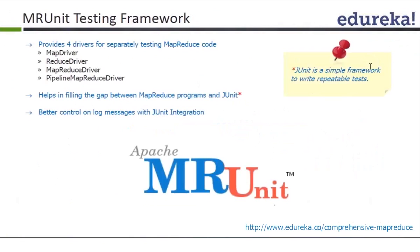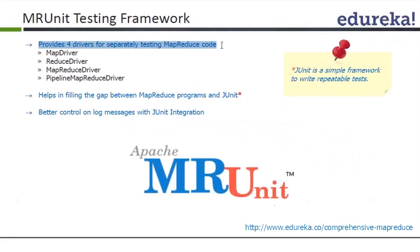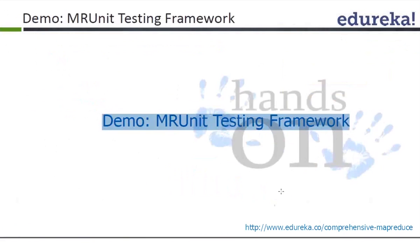The MR Unit is a testing framework. JUnit is a simple, repeatable Java framework for testing. MR Unit gives you four drivers: a MapDriver to test only the map function, a ReduceDriver to test only the reduce function, a MapReduceDriver to test both for one job, and a PipelineMapReduceDriver to test a chain of jobs. MR Unit fills the gap between MapReduce and JUnit, giving better control over log messages.